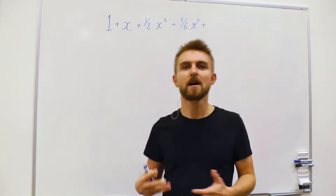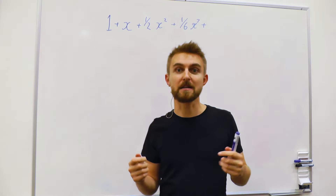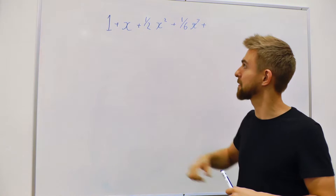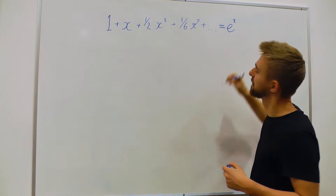In this session we're going to talk about power series, which is simply series of ascending powers of x that we can use to approximate any function, assuming it is what we call well-behaved. Well-behaved in this context means that it's smooth, doesn't contain discontinuities, and can be differentiated as many times as you want. For example, this series — 1 plus x plus a half x squared plus a sixth x cubed — can actually be used to approximate the function e to the x.